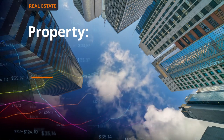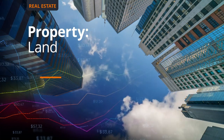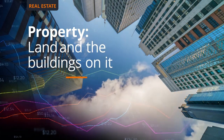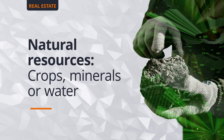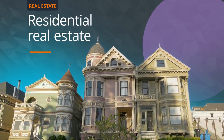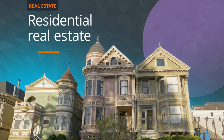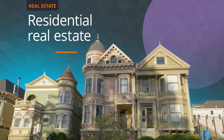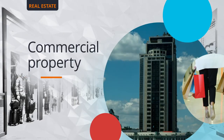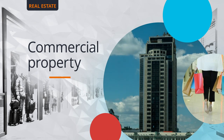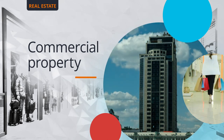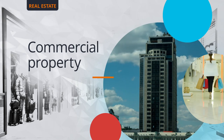Real estate refers to property in the form of land and the buildings on it, along with its natural resources such as crops, minerals or water. Residential real estate refers to property intended for domestic occupation, whereas commercial property includes categories such as office buildings, retail shops and malls, factories, hotels, warehouses, hospitals, care homes and garages.